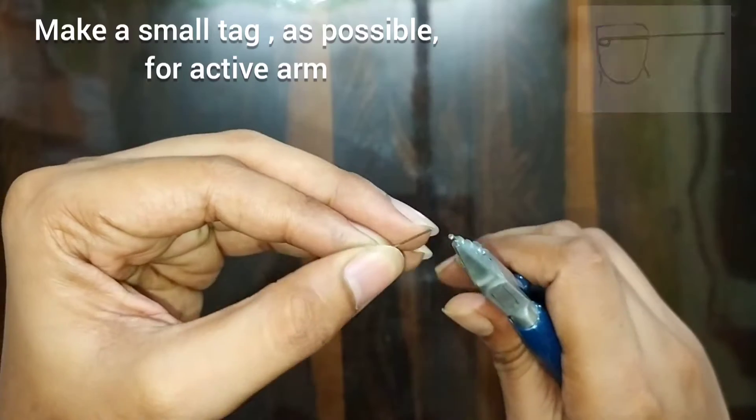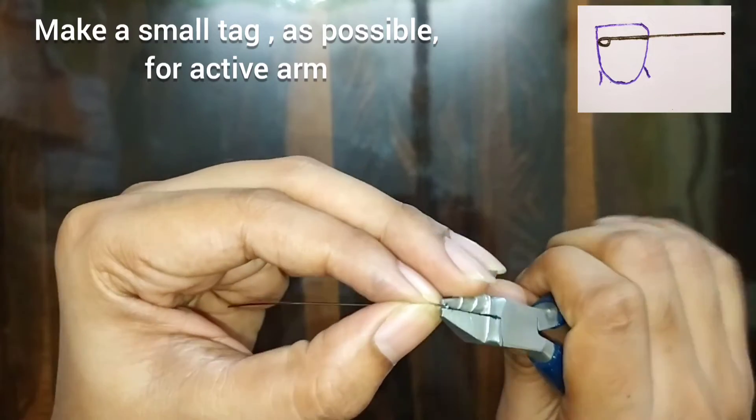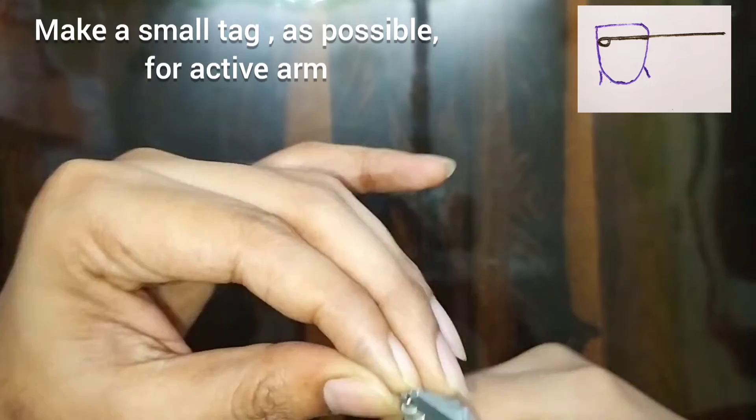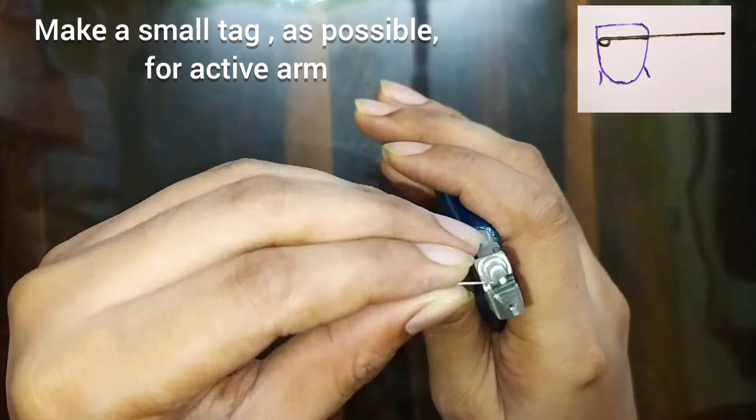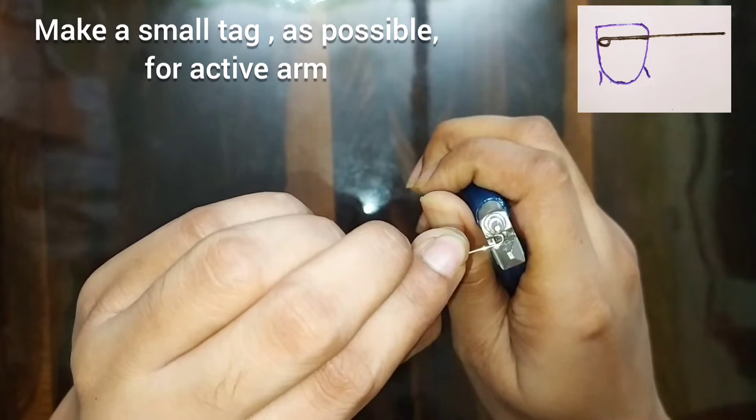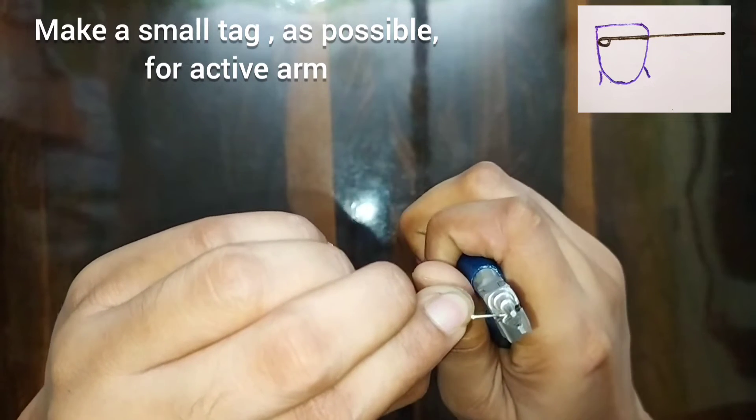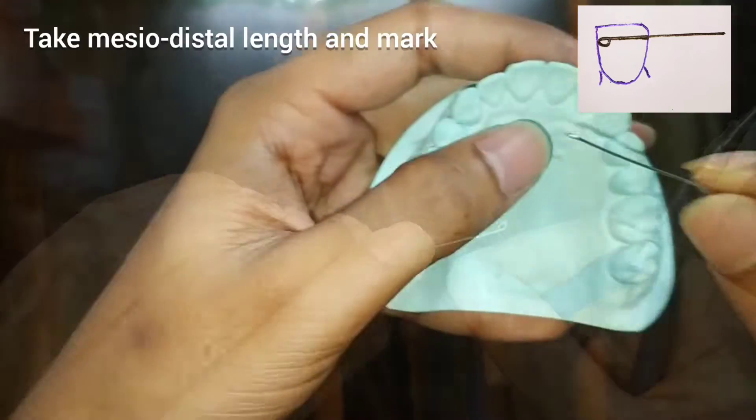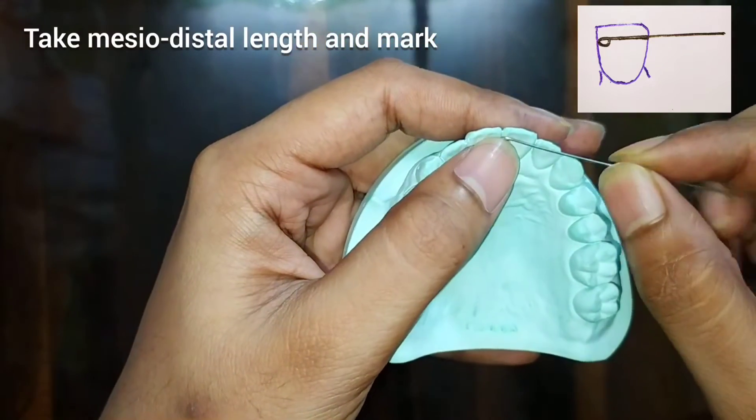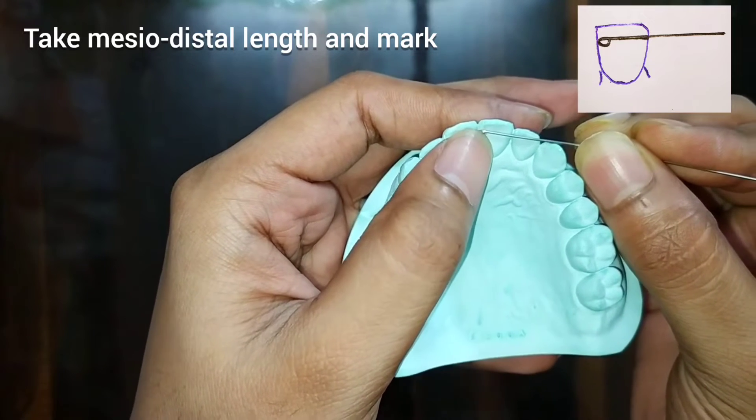First, we will make a small tag at the corner of the wire. Make it as small as you could. This will form the active arm of our Z spring. Keep the active arm on the central incisor. The tag should face towards the mesial side.